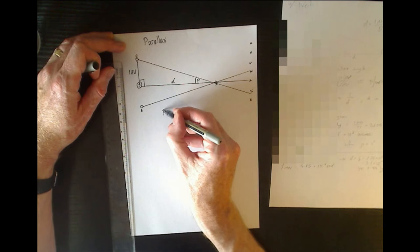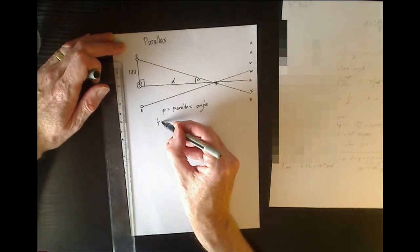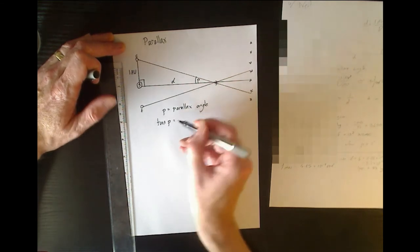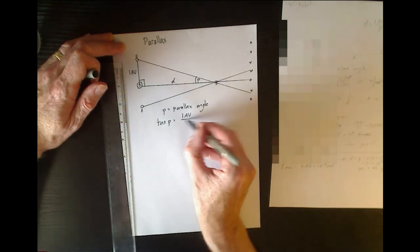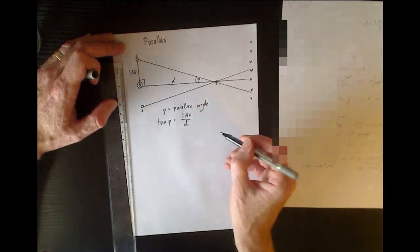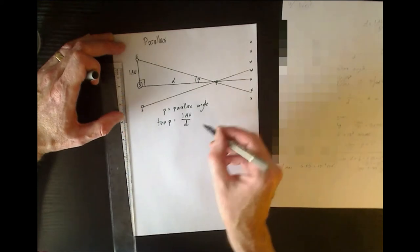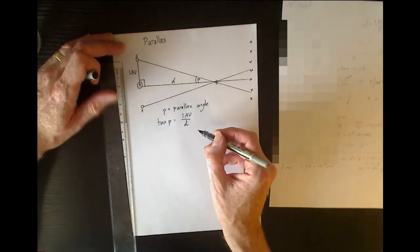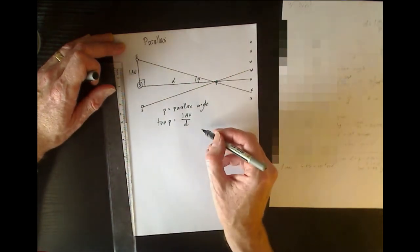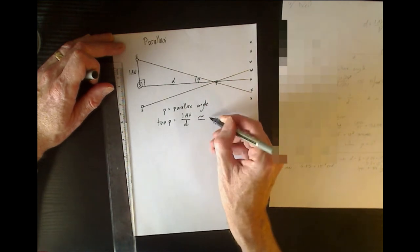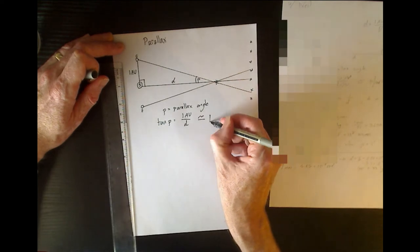So P is the parallax angle, and if we look at the right angle triangle, we can take the tan of P being equal to the opposite side, which is one astronomical unit, divided by the distance between the Sun and the star. And according to that equation, the distance would then be in astronomical units as well. Now because the angle P is typically extremely small, then it's an extremely good approximation that one astronomical unit divided by the distance in astronomical units is equal to P.